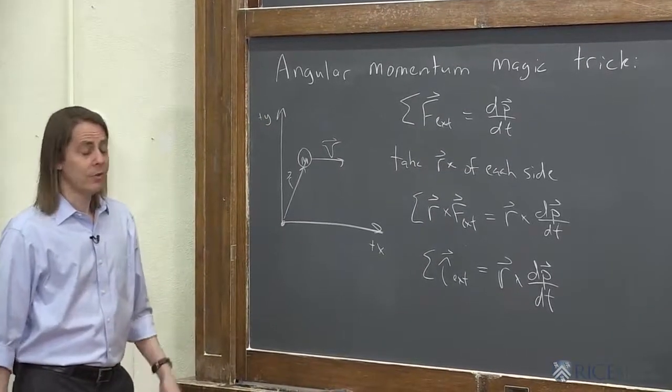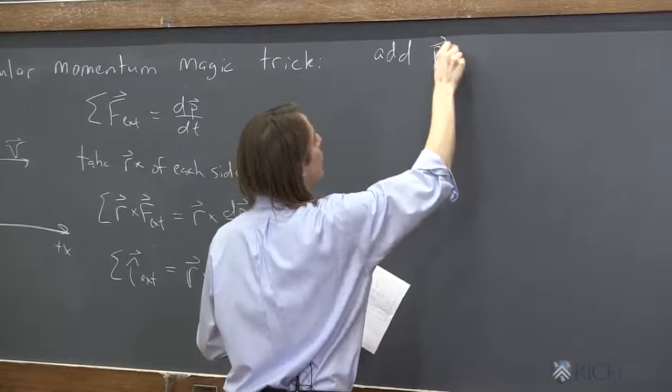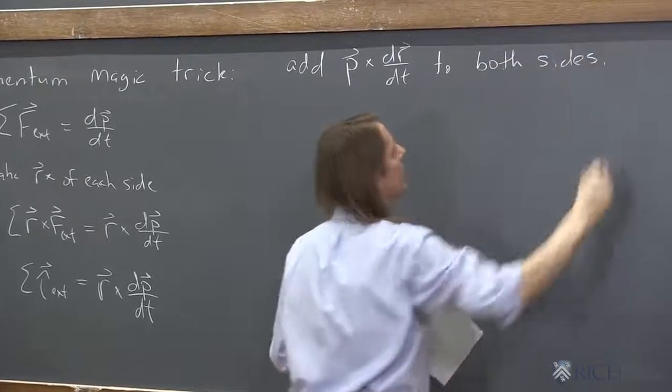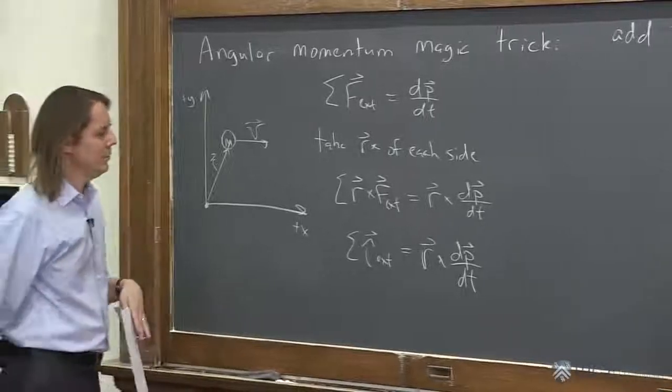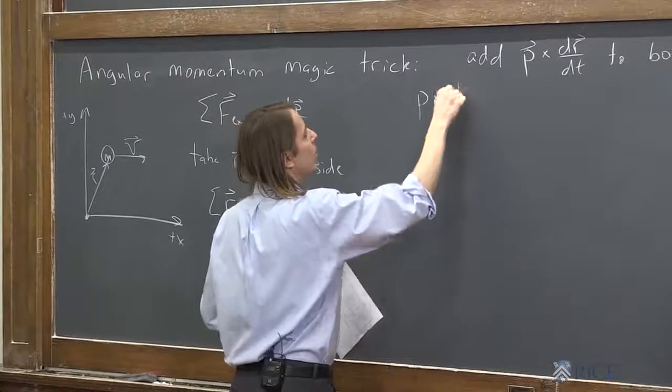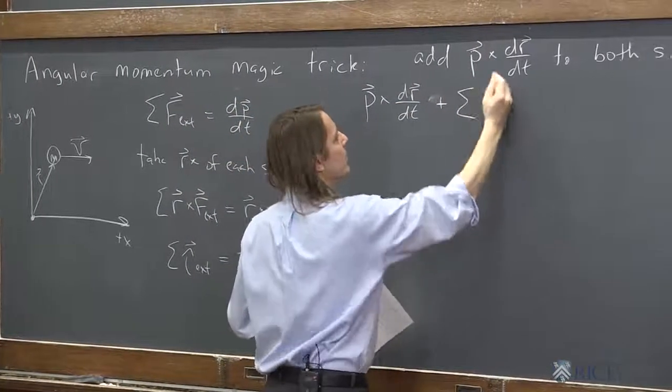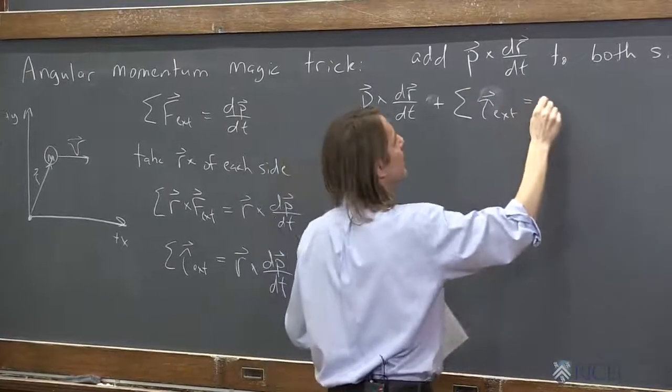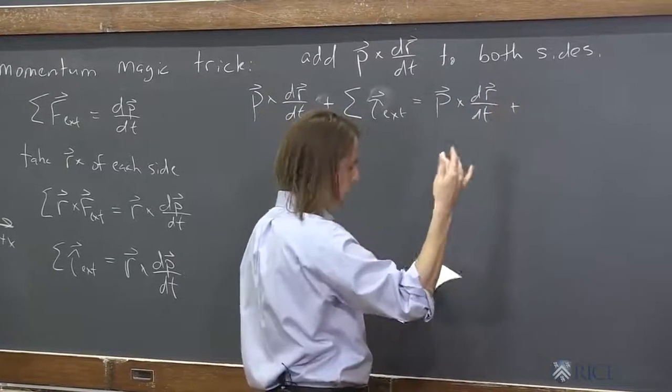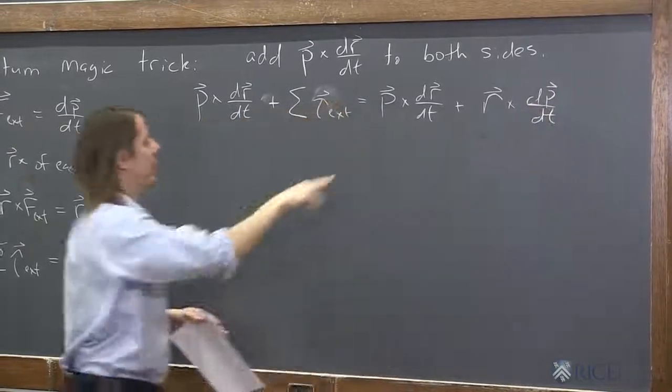And now here comes the second sleight of hand. We're going to add p cross dr dt to both sides. Why? Well, it's OK. This is an equation. We can add a term to both sides as long as it's the same. It's still an equation. So we'll say p cross dr dt plus the sum of the external torques equals p cross dr dt plus our original term, r cross dp dt. So that part is just that part.